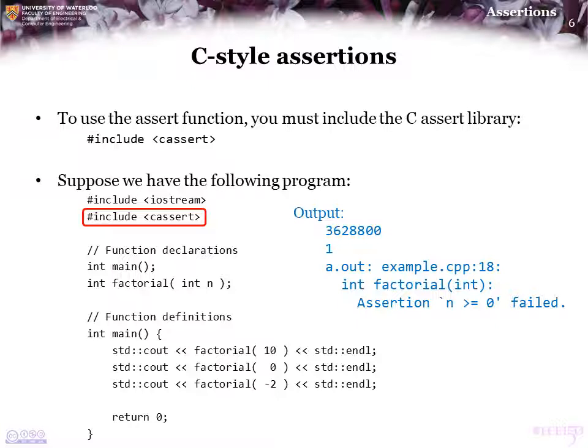And then for factorial of negative 2, it says specifically in this program or in this executable created from the file example.cpp on line 18, inside the factorial function, there is an assertion that failed, specifically the assertion n greater than or equal to 0 failed.